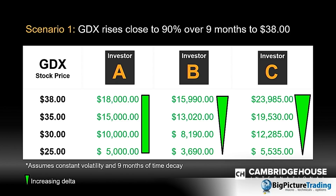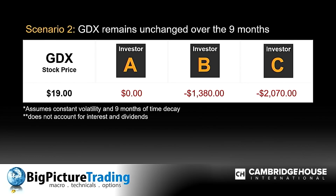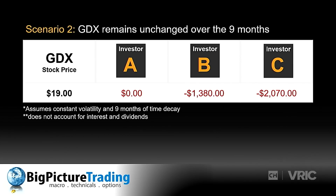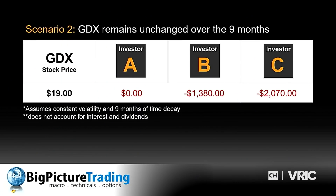In Scenario 2, GDX does nothing over nine months — stays flat. Investor A is flat, losing only the opportunity cost. Investors B and C are burning premium — when you buy a call option, the option decays over time, and there's a cost to carrying it. This is the negative side of options — something you have to accept when using options as a strategic tool.